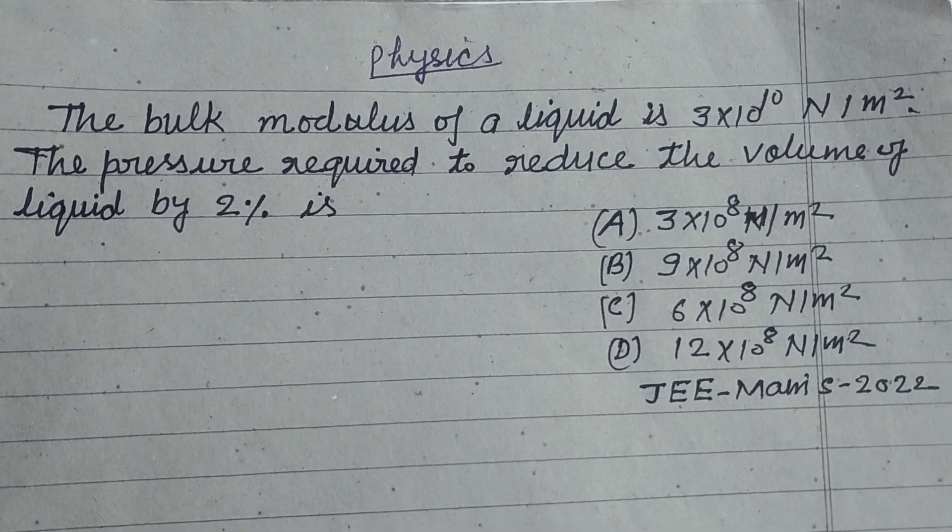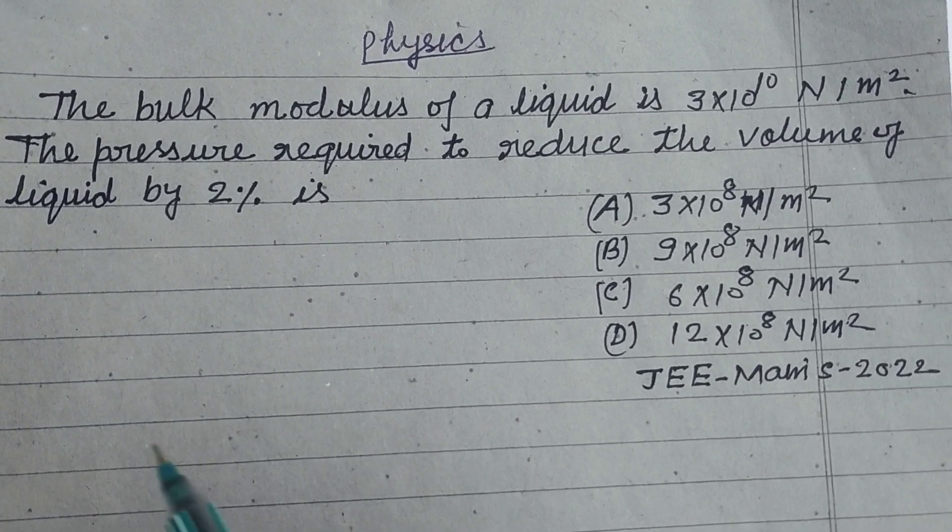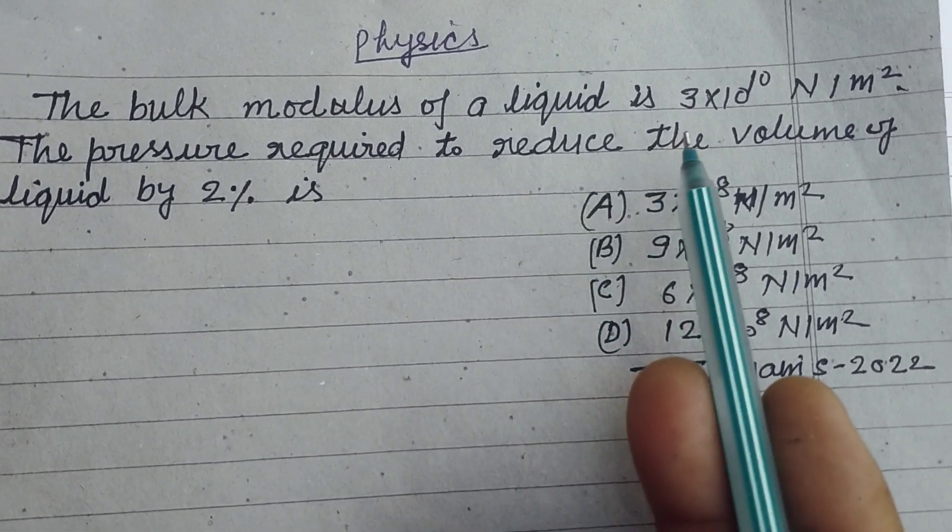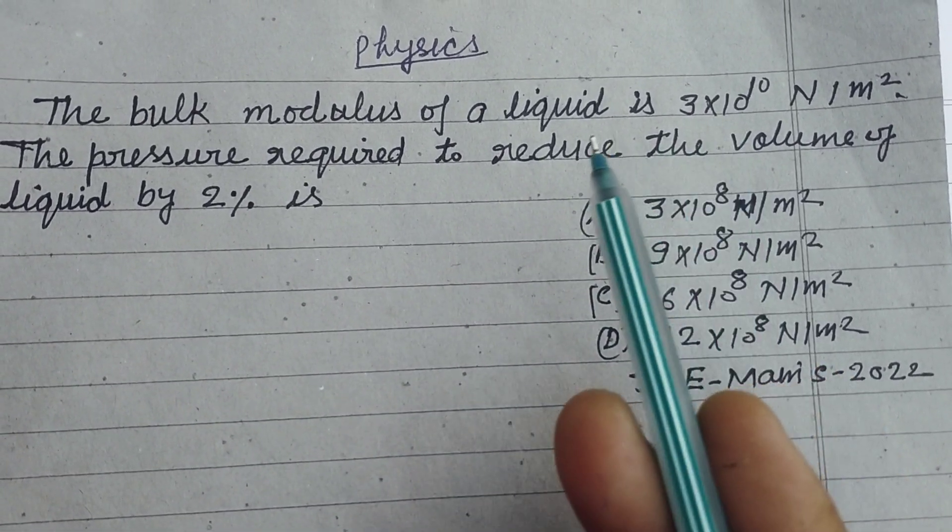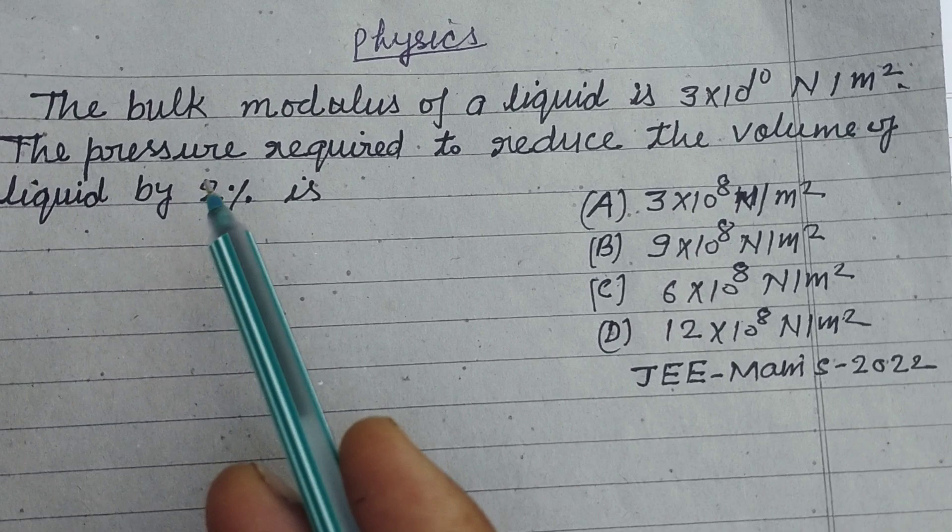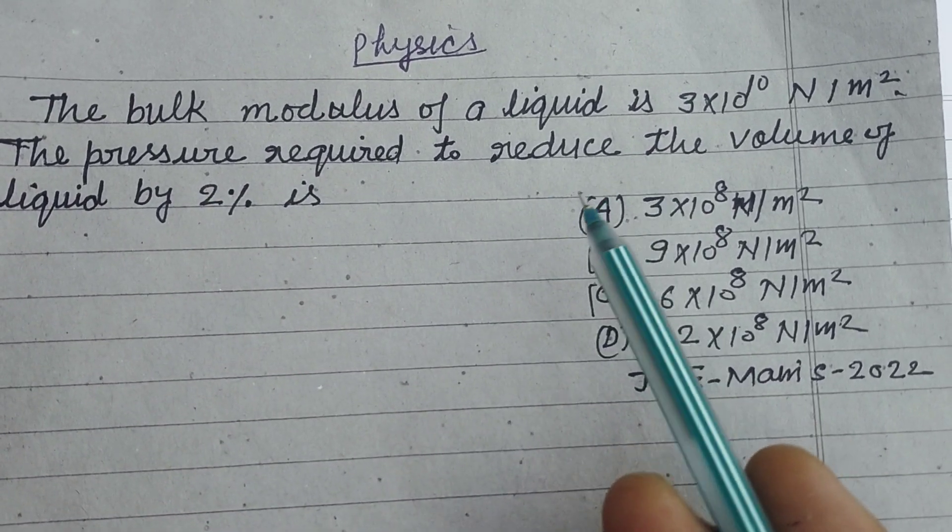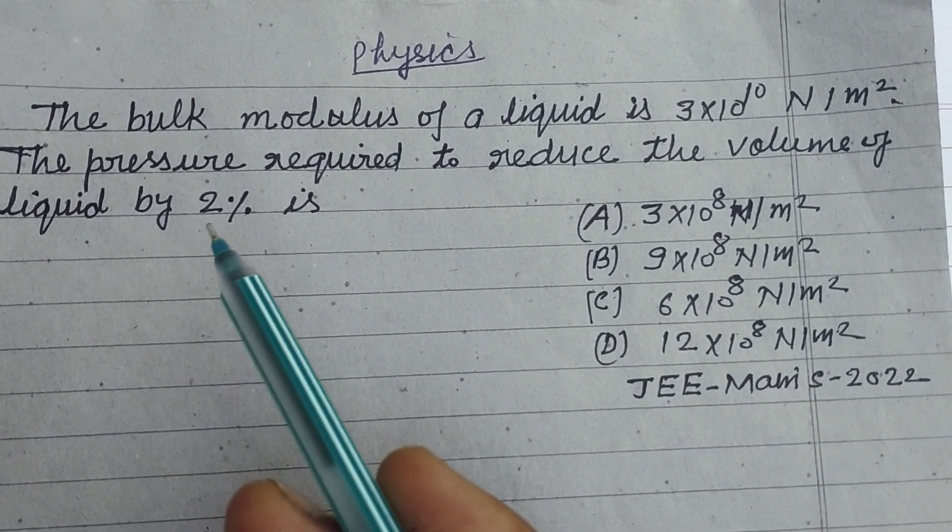Hello student, warm welcome to this YouTube channel. The bulk modulus of a liquid is 3×10¹⁰ N/m². The pressure required to reduce the volume of the liquid by 2% is: